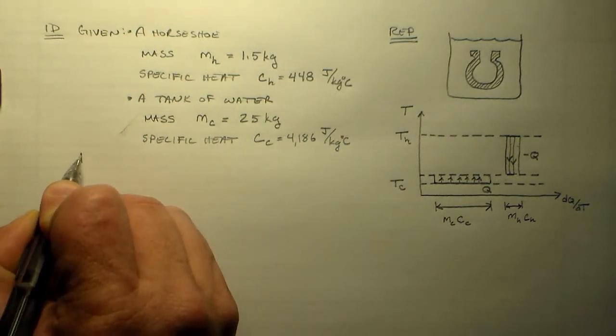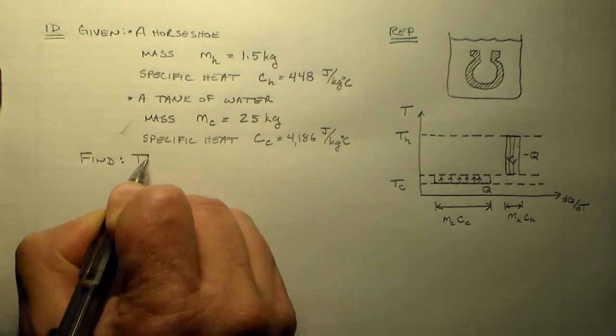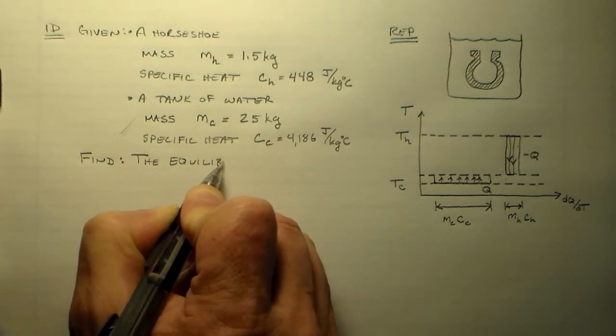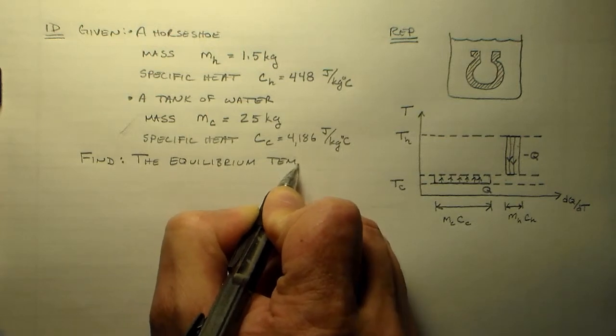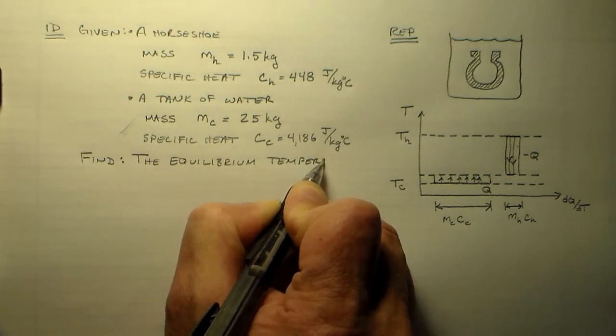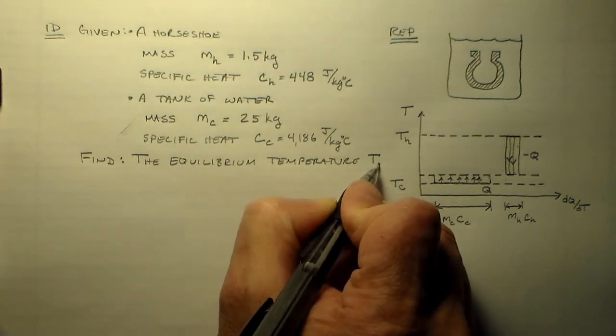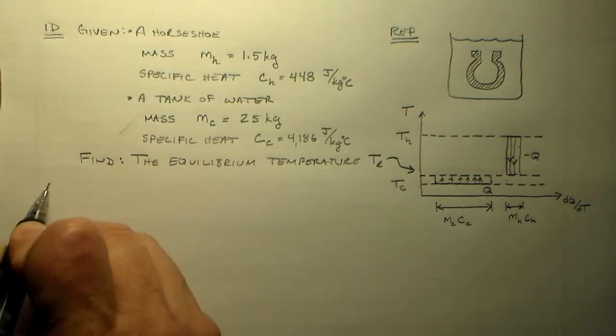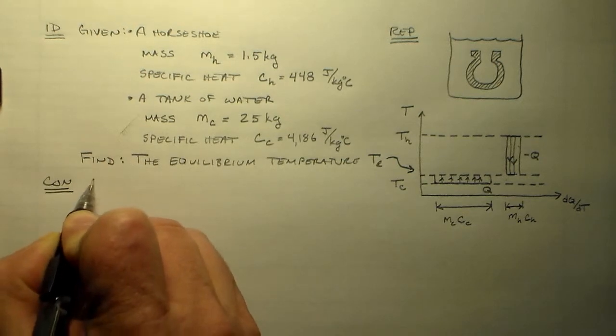So finally, we want to find the final temperature, the equilibrium temperature. It's equilibrium temperature. We'll call it Te, and it's that guy right there. Wasn't that lucky. All right, so what kind of problem is this? This is calorimetry.